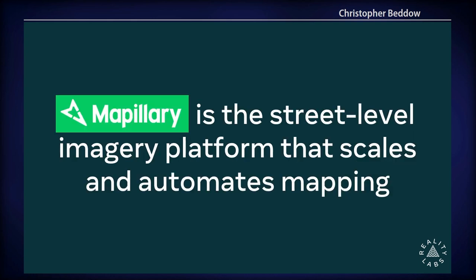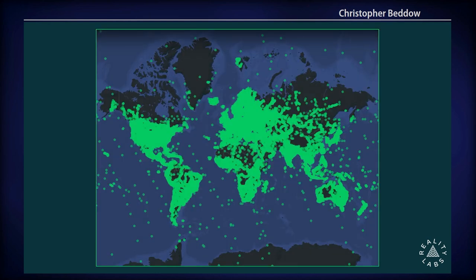In one phrase, Mapillary is the street-level imagery platform that scales and automates mapping. Zoomed out, it looks pretty global, but if you zoom in there are gaps, and the user community fills those gaps. Somewhere like Budapest today you'll see tons of imagery covering the bridges, probably something from about every month going back a few years. And if you go somewhere like northern Alaska, you may find very few images — places where no one has gone and mapped.